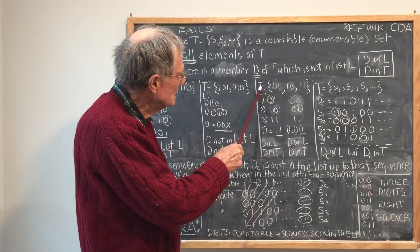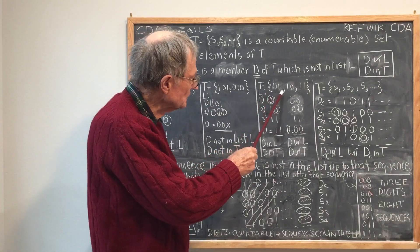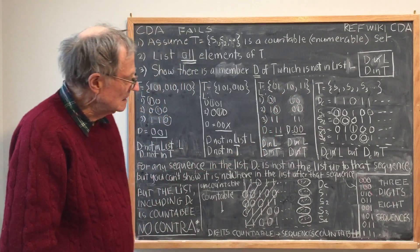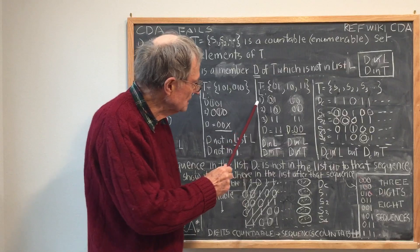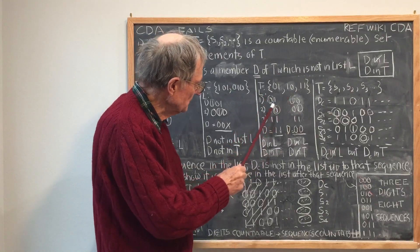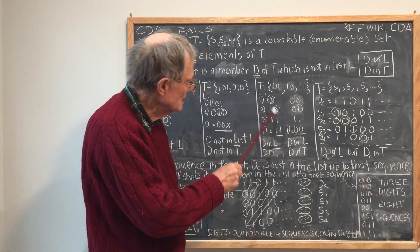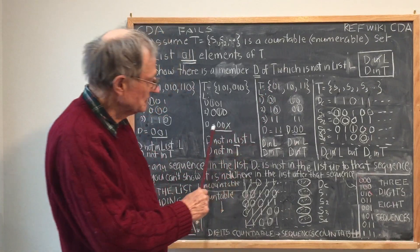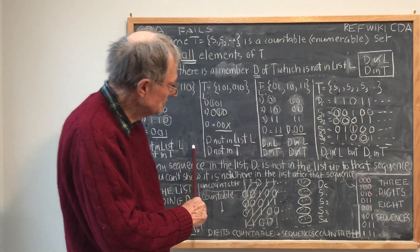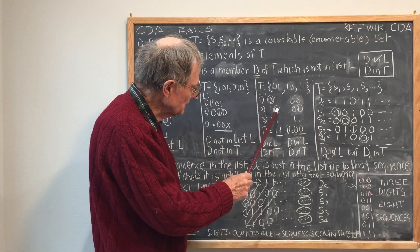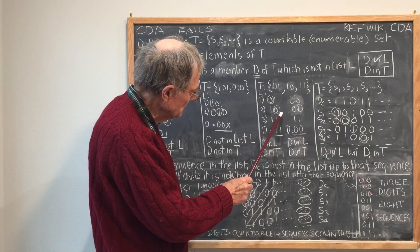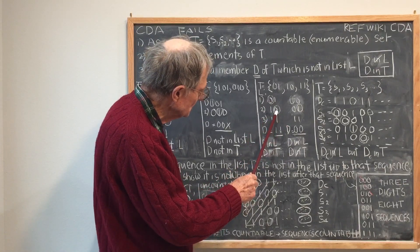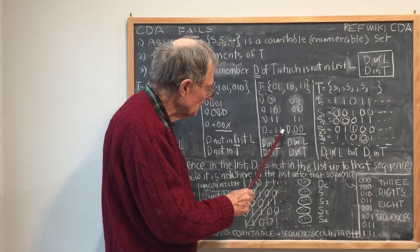Then I've taken the set T consisting of three binary elements: 0,1; 1,0; 1,1. I've created the list of these elements. Following the same procedure, I've created D — I can only do it for the first two elements because the diagonal ends there. I can change 0 to 1, so I come up with D equal to 1,1.